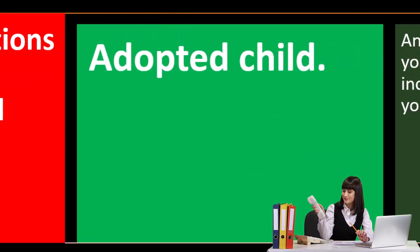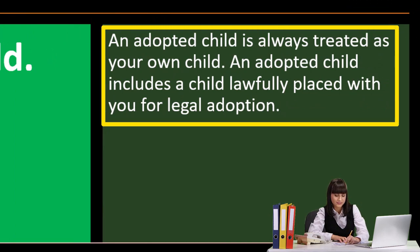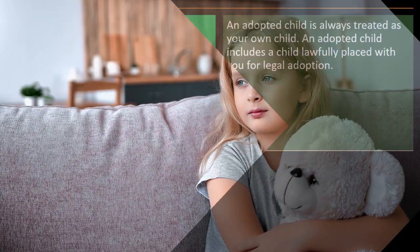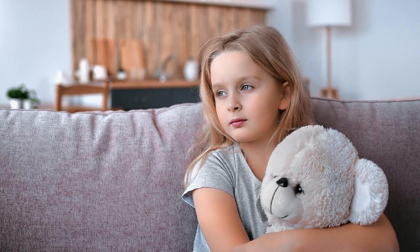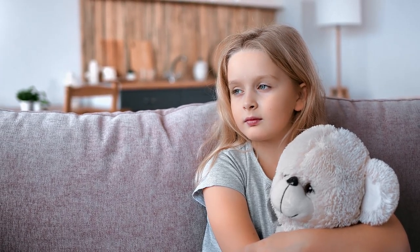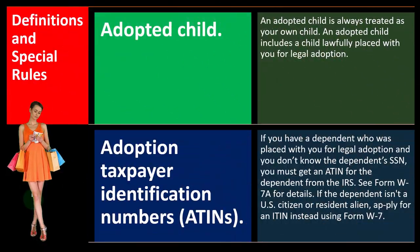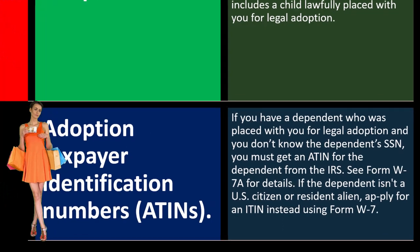Adopted child: an adopted child is always treated as your own child. An adopted child includes a child lawfully placed with you for legal adoption. Anytime that comes up, it's a pretty straightforward rule — they are basically your child with regards to taxes related to them.